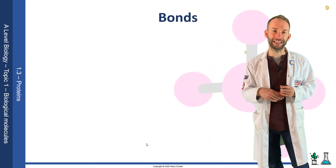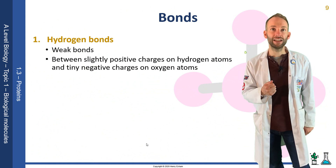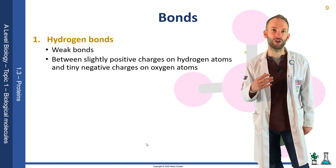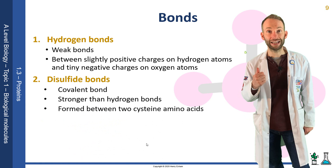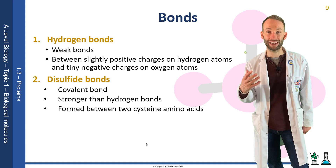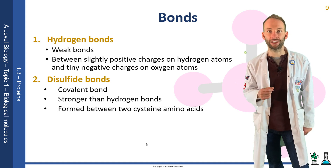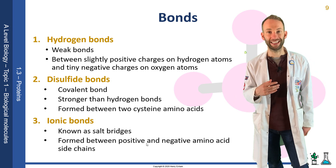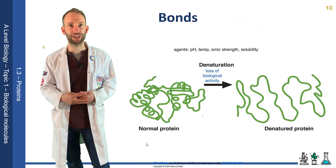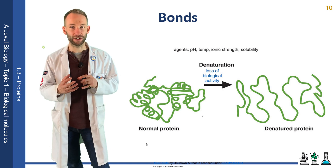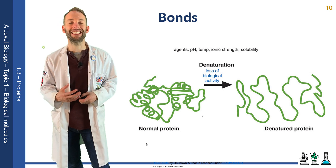Let's look a little more at the bonds. Hydrogen bonds are quite weak, formed between the slightly positive charge from hydrogen atoms and the tiny negative charges on oxygen atoms. Disulfide bonds are covalent bonds — they are quite strong, and they're formed between two cysteine amino acids; it's cysteine that has sulfur in it and can form these disulfide bonds. Ionic bonds, also known as salt bridges, are formed between positive and negative amino acid side chains. These bonds are sensitive to changes in temperature and pH — they can break and cause the protein to lose its complex 3D shape, which determines its function. When that happens, we say it has become denatured.